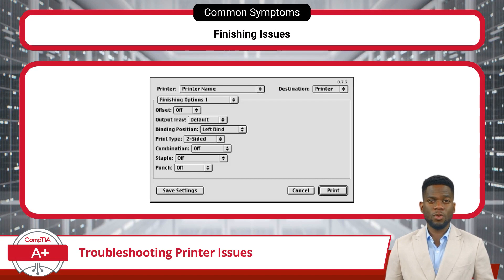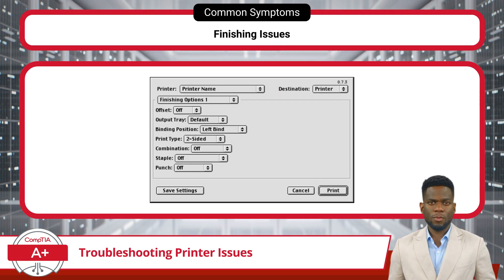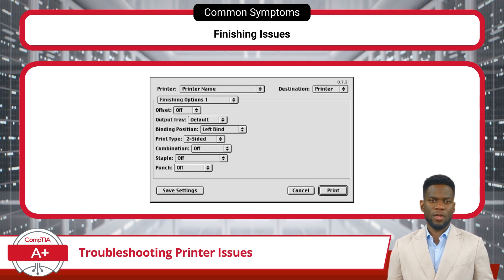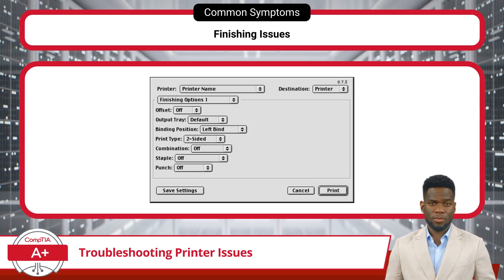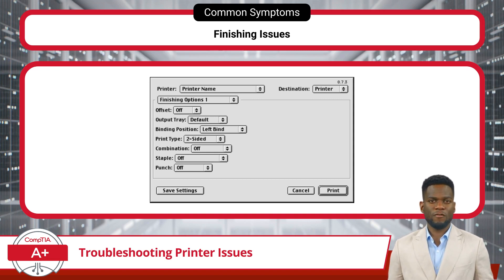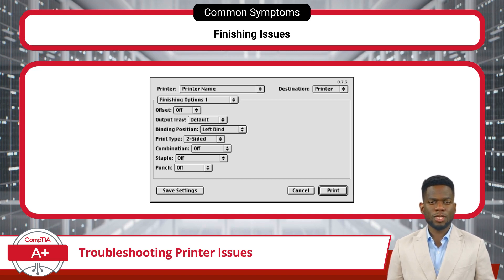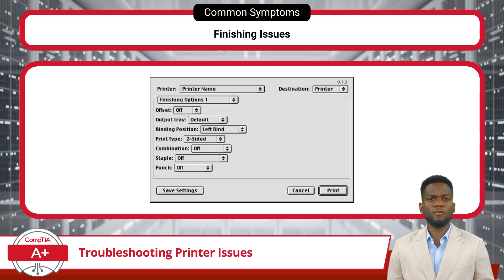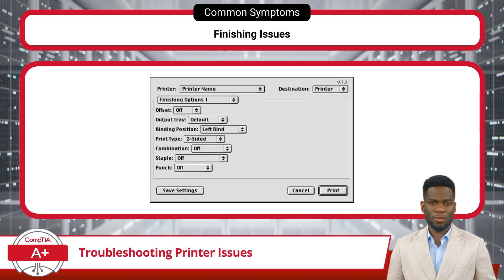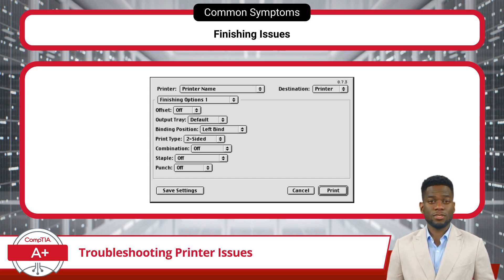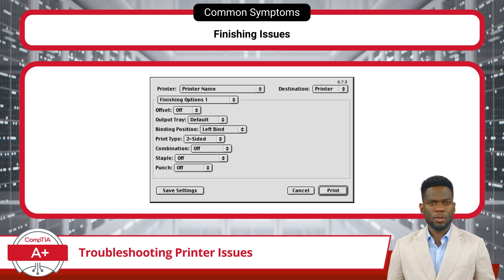Finally, there are issues related to printer finishing units — optional components in some printers that provide additional features such as stapling, hole punching, and folding. Issues can arise particularly with hole punching and stapling when users attempt to process a stack of sheets that exceeds the maximum capacity supported by the finishing unit, which can lead to jams and malfunctions.